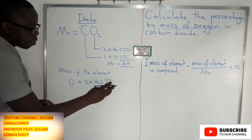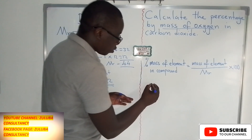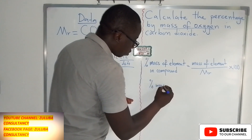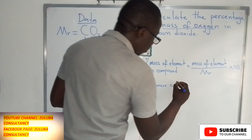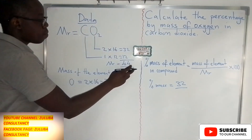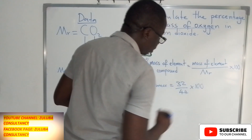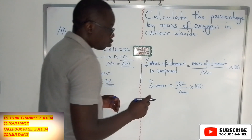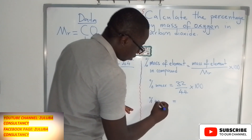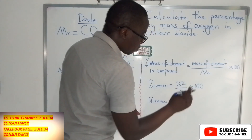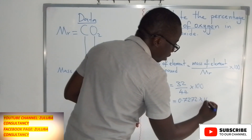So we have the two numbers, 32 and 44, and we can now go back to our formula. The percentage by mass equals the mass of the element — which is 32 — divided by the Mr of the compound, which is 44, multiplied by 100. So 32 divided by 44 gives us 0.7272, multiplied by 100.